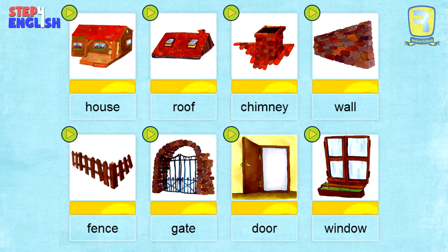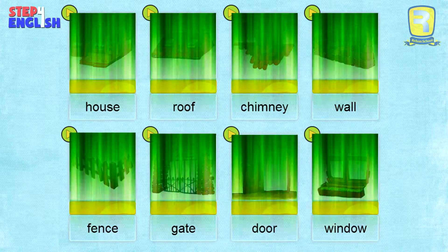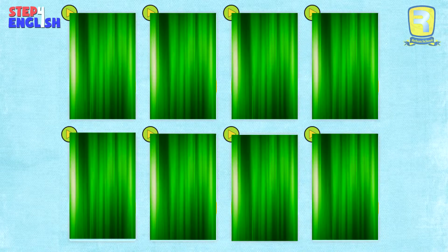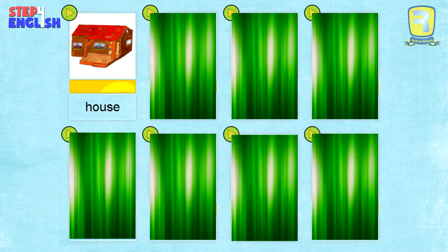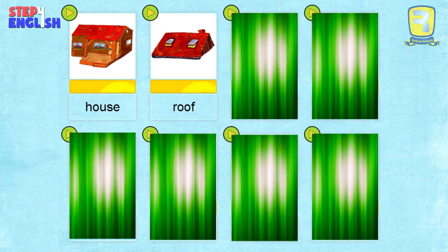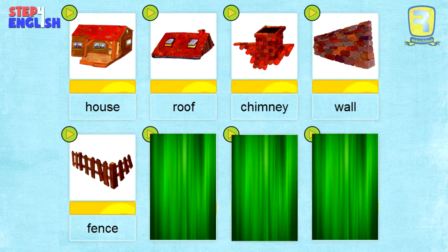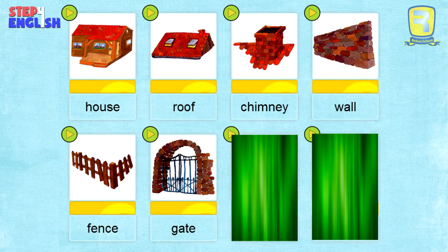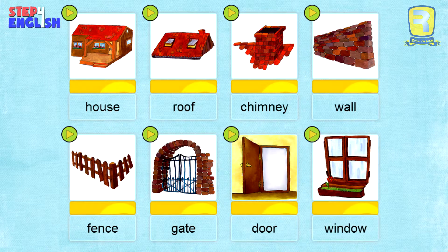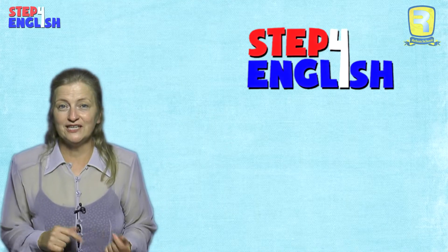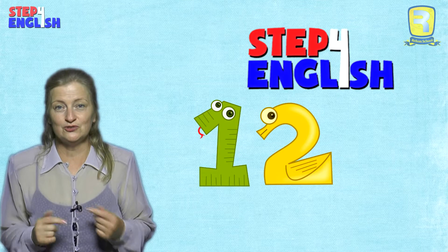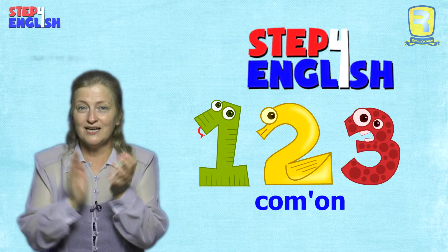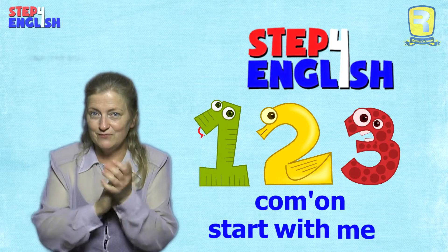Then try to cover the pictures as well and repeat again and again. House, roof, chimney, wall, fence, gate, door, window. Step for English, one, two, three, come and start with me.